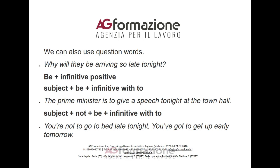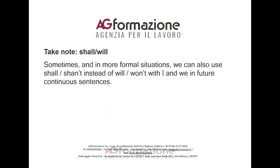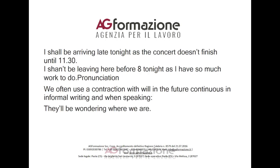'Be plus infinitive' positive: subject plus 'be' plus infinitive with 'to'. The prime minister is to give a speech tonight at the town hall. Subject plus 'not' plus 'be' plus infinitive with 'to': You're not to go to bed late tonight — you've got to get up early tomorrow. Take note: 'shall' — sometimes, and in more formal situations, we can also use 'shall/shan't' instead of 'will/won't' with 'I' and 'we' in future continuous sentences. I shall be arriving late tonight as the concert doesn't finish until 11:30. I shan't be leaving here before 8 tonight as I have so much work to do. We often use a contraction with 'will' in the future continuous in informal writing and when speaking.